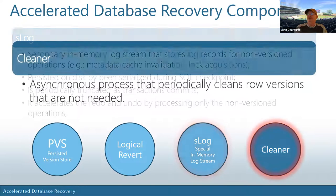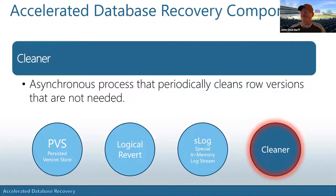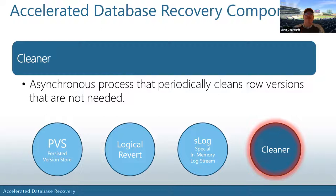Those are our four components: the persistent version store, logical revert, secondary log, and the cleaner — an asynchronous process to maintain the size of the PVS. A common concern is whether the PVS gets huge, but you're also saving space on TempDB and transaction logs, and the cleaner continuously manages the PVS size. We'll see that in the demonstration.